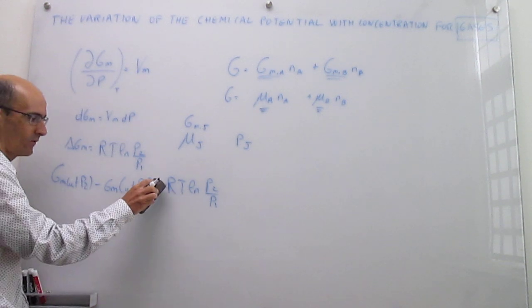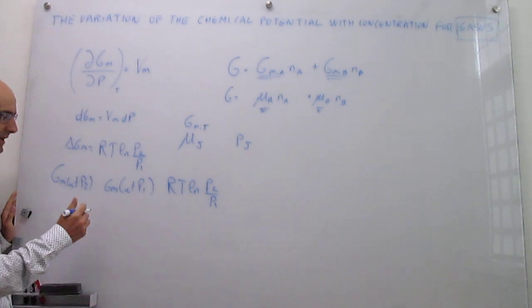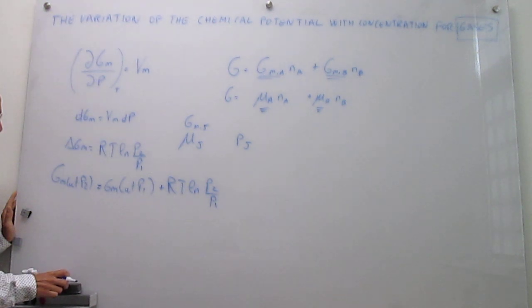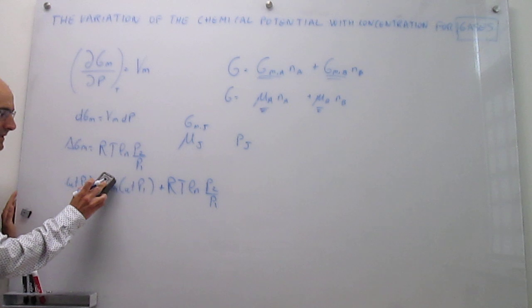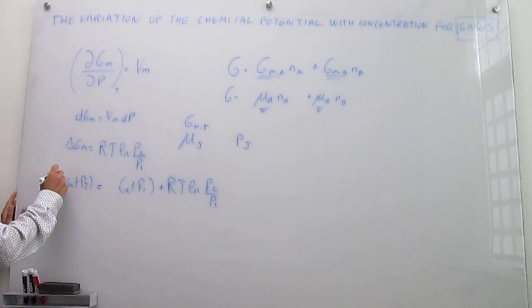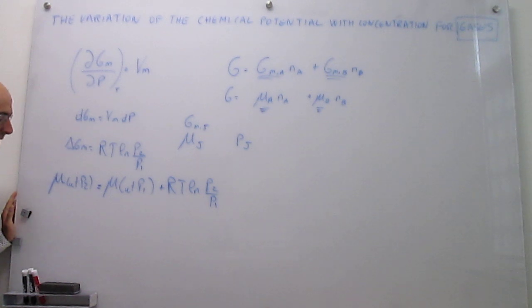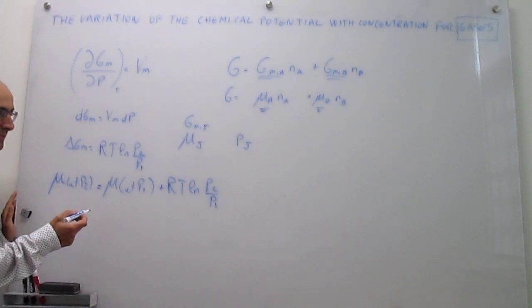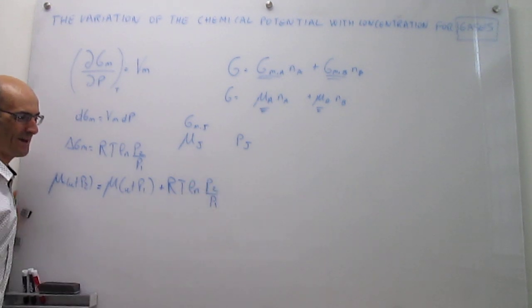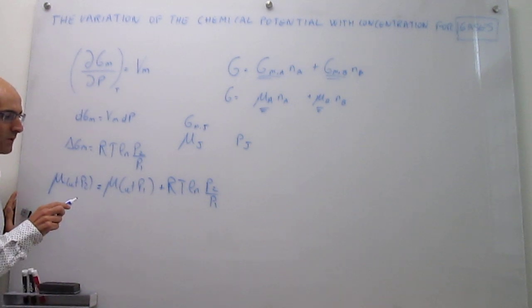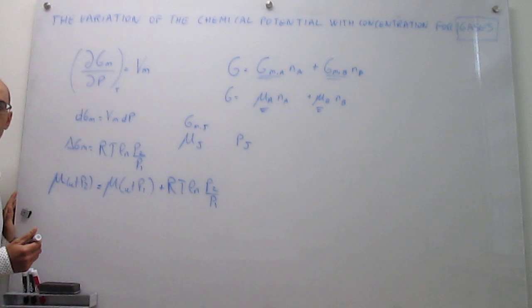We can solve for the molar Gibbs energy at pressure P₂. Then, renaming these molar Gibbs energies as chemical potentials: the chemical potential at pressure P₂ equals the chemical potential at pressure P₁ plus RT ln(P₂/P₁). This tells you how the chemical potential changes with pressure. Notice that if you increase the partial pressure a lot, the chemical potential grows, which is what you expect to find. We are going to reformulate this a little bit with a couple of simple changes.